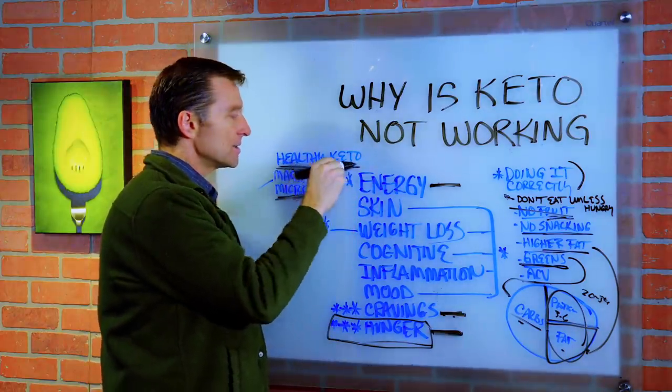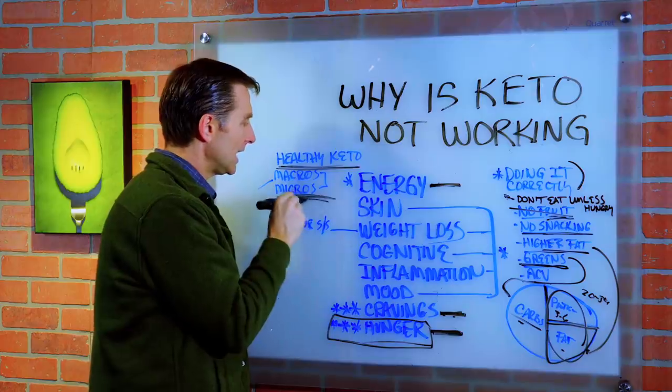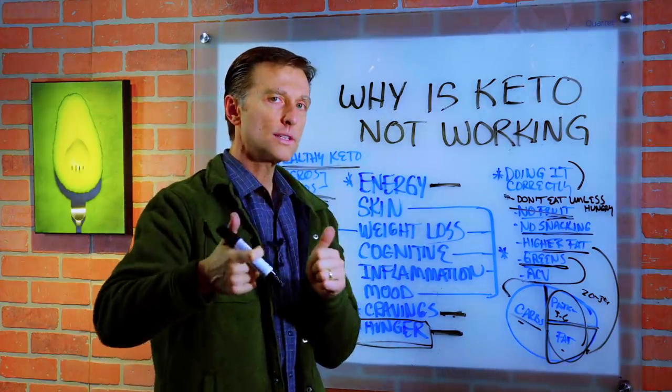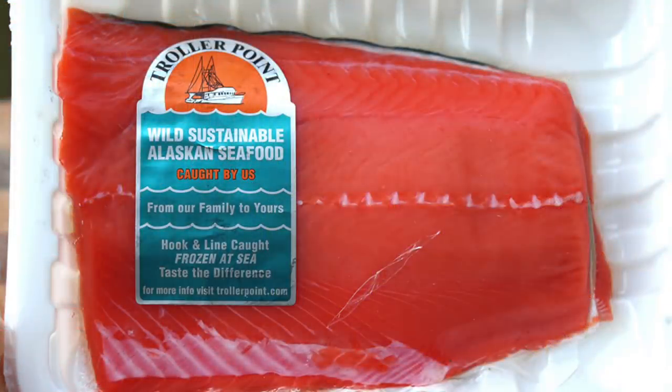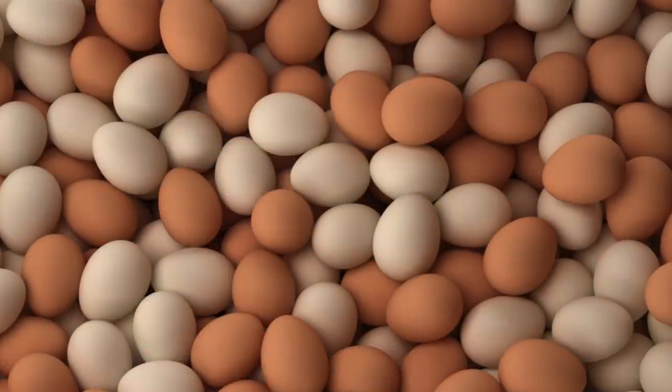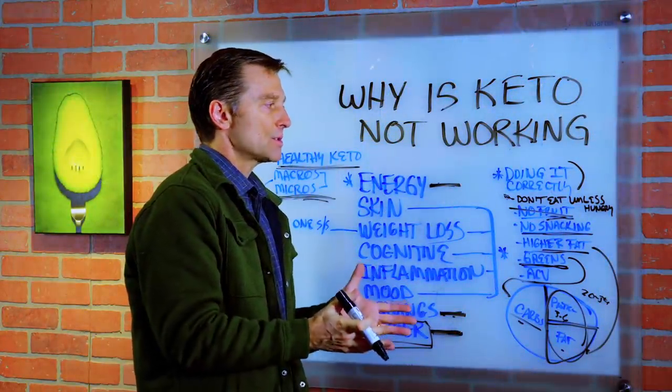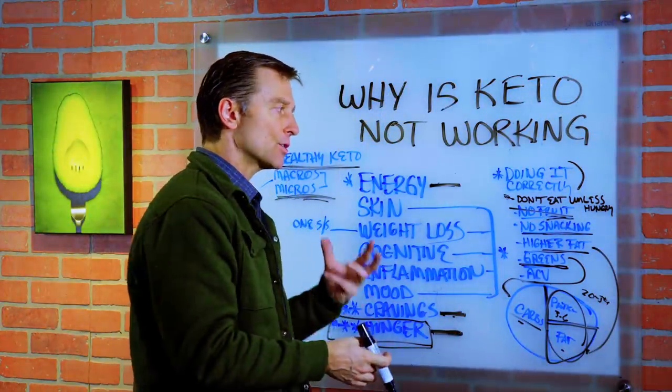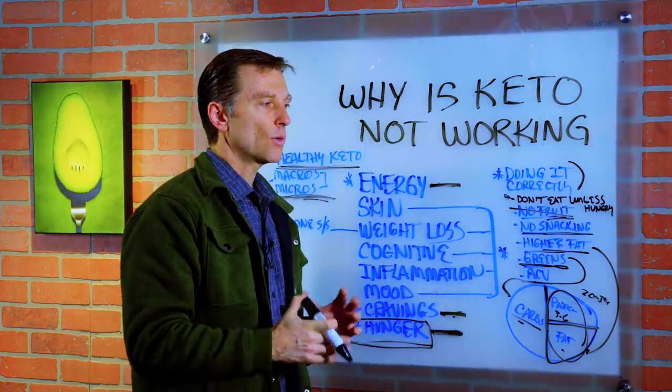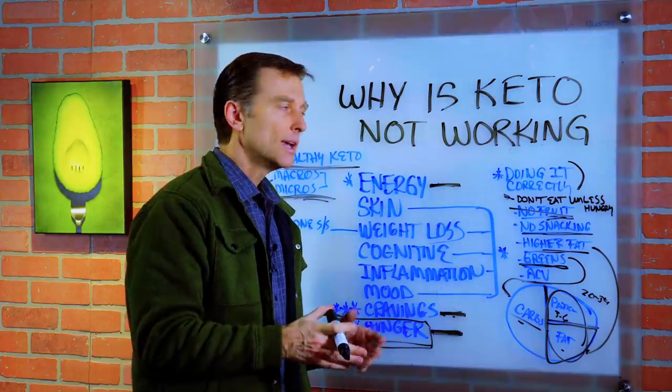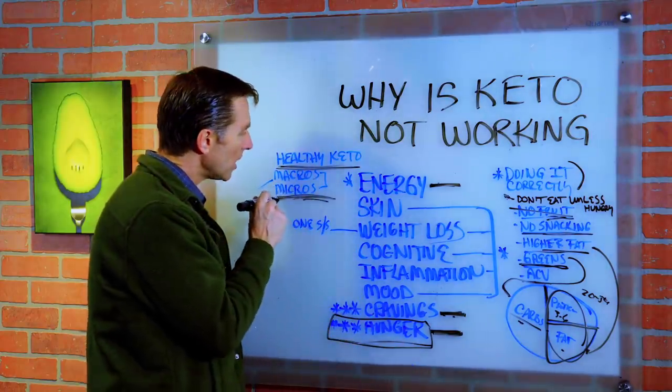But healthy ketosis is also getting your micros, your micronutrients in the macros. So we want to increase the quality of food. So salmon, wild caught salmon, pasture raised organic eggs. Very important. If you're going to do cheese, make sure it's organic cheese. If you're going to do cream, make sure it's organic cream, not commercial. If you're going to do meats, make sure it's wild caught or organic, not just processed meat. So we want higher quality of food.